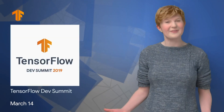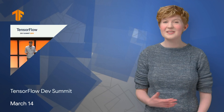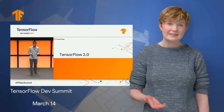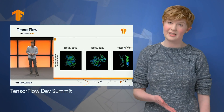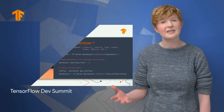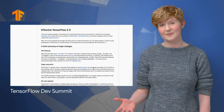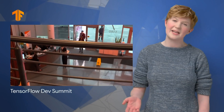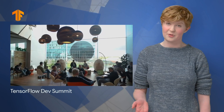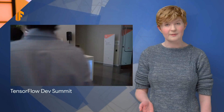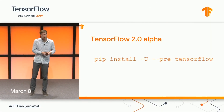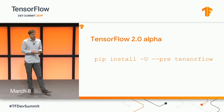TensorFlow 2.0 Alpha is here. This new version of TensorFlow is about providing simple and easy-to-use higher-level APIs focused on Keras and eager execution. The big announcement came at the TensorFlow Dev Summit in Sunnyvale, California. TF 2.0 is all about making TensorFlow simple and easy to use with higher-level APIs focused on Keras and eager execution.